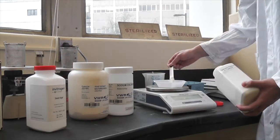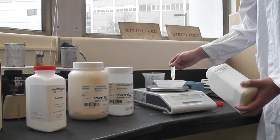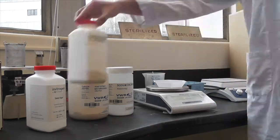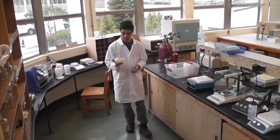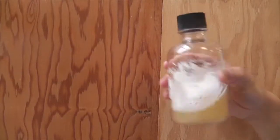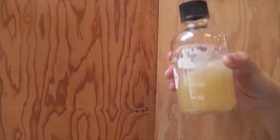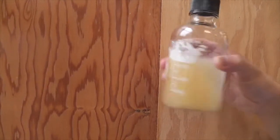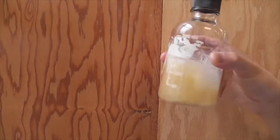First, weigh out and mix together all the ingredients required to make your desired media in a bottle that can be autoclaved. Next, add the correct amount of distilled water to the bottle and mix thoroughly. Ensure there are no clumps of dry material remaining in the bottle. The media is now ready to be autoclaved.